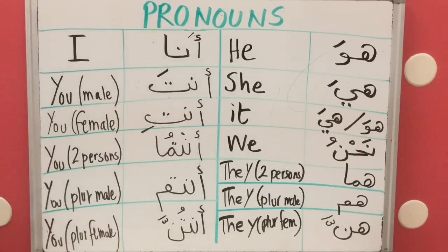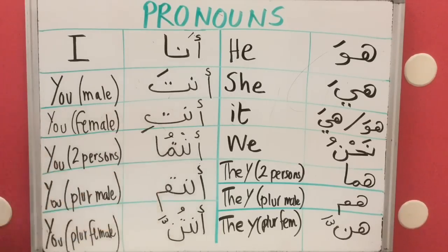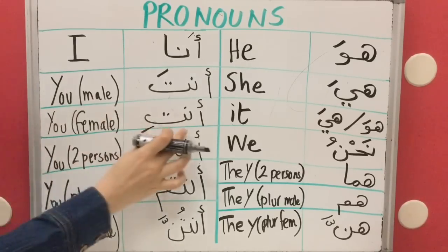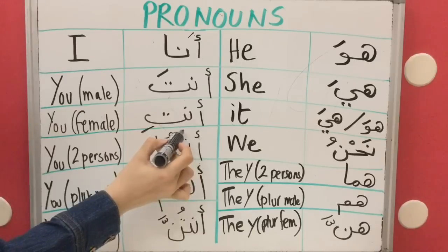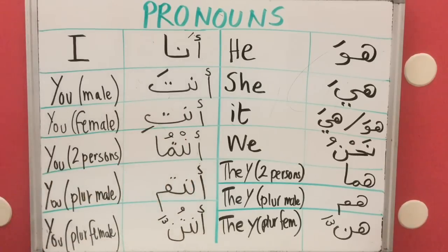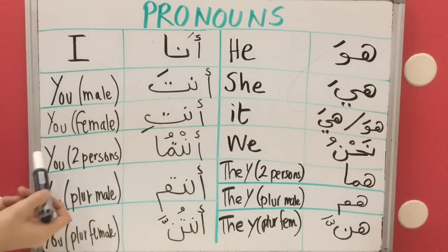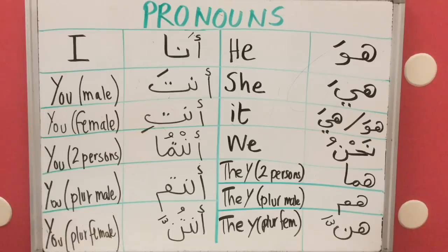Antuma. Antuma. This is a sukoon, okay? Let me make it more clear. Antuma. Antuma. If they are two people, male or female, for both it's the same.